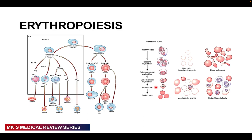There are changes happening to the cell as it moves through the different stages. The color of the cytoplasm changes because of the appearance of hemoglobin — from pale blue, to a mixture of blue and pink, to completely pink. The nucleus condenses and is extruded. The cells also become smaller with each division. Interleukins such as interleukin-6 and interleukin-11 are involved, forming colony-forming units that eventually give rise to red blood cells through this entire process.